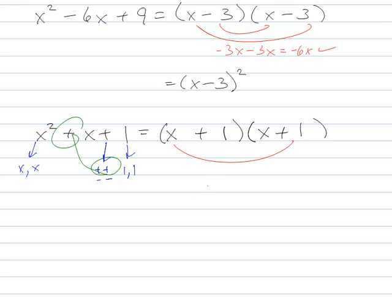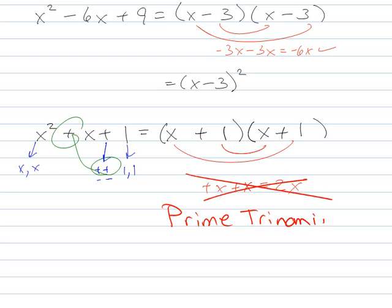Because here you see if I go outer, inner, that actually gives me 2x, which is not what I want. And it's not because I did anything wrong. It's because there's actually no other way to do this. So this is considered a prime trinomial. It can't be factored into anything. So it is as perfect as it's going to get.